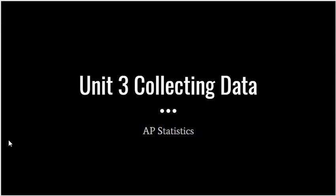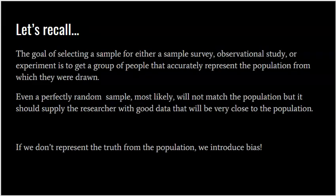Welcome to Unit 3, Collecting Data for AP Statistics. This video will focus on Topic 3.4, Potential Problems with Sampling. The goal of selecting a sample for either a sample survey, observational study, or experiment is to get a group of people that actually represent the population from which they were drawn. Even a perfectly random sample most likely will not match the population, but it should supply the researcher with good data that will be very close to the population.